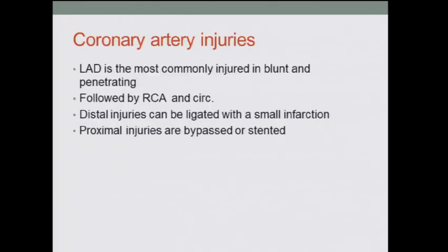Let's talk about cardiothoracic trauma. We'll start with coronary artery injuries, though ventricular injuries are probably the most common. The LAD, being in the anterior part of the chest and mediastinum, is the most commonly injured in both blunt and penetrating trauma. The RCA, also more anterior, is the second most commonly injured. The circumflex, being posterior, is less commonly injured, and there is also some lung protection for the circumflex.